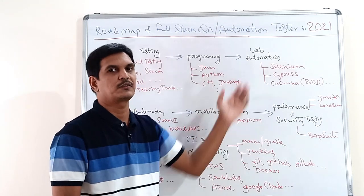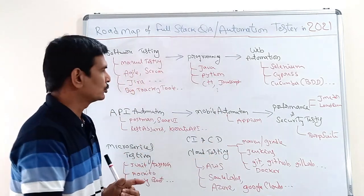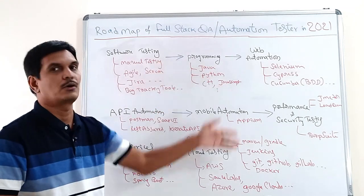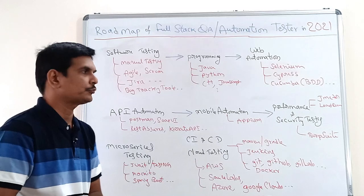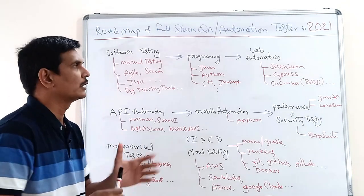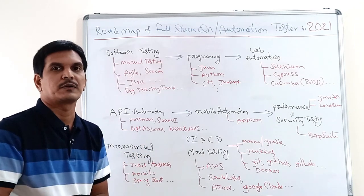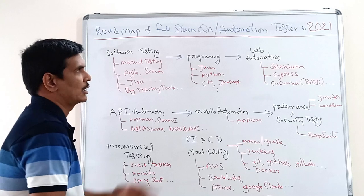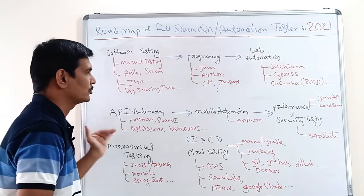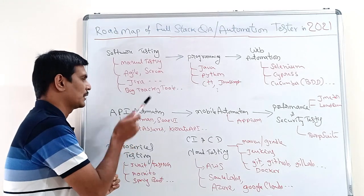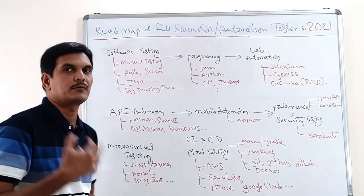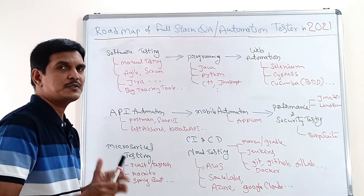Once you learn web automation and Selenium, the next level is API automation. Nowadays most companies are expecting API automation skills because web automation alone is not enough for complete testing. Most companies are doing 70 to 80 percent API testing and 20 to 30 percent web application testing. So after web automation, API testing is the next very important skill to learn and it will add advantage to your resume. API stands for Application Programming Interface.